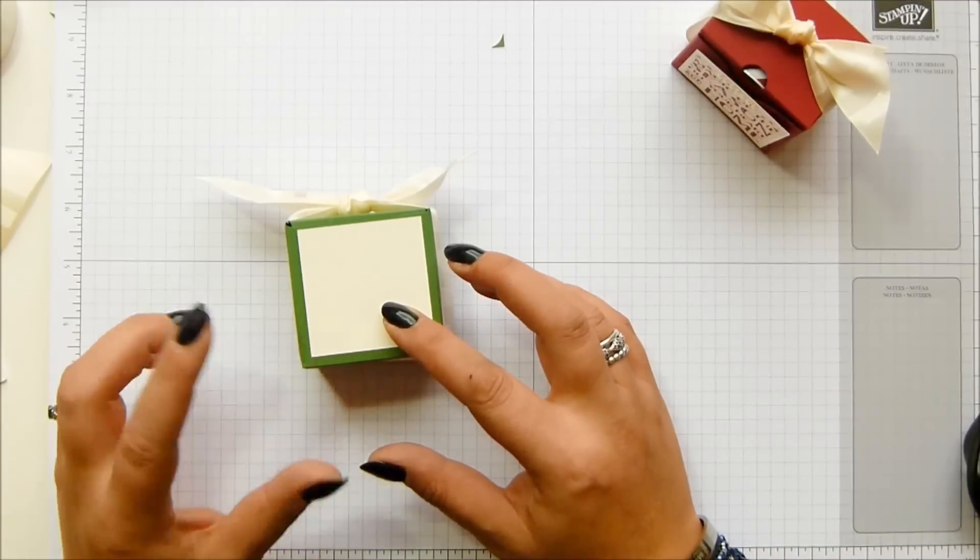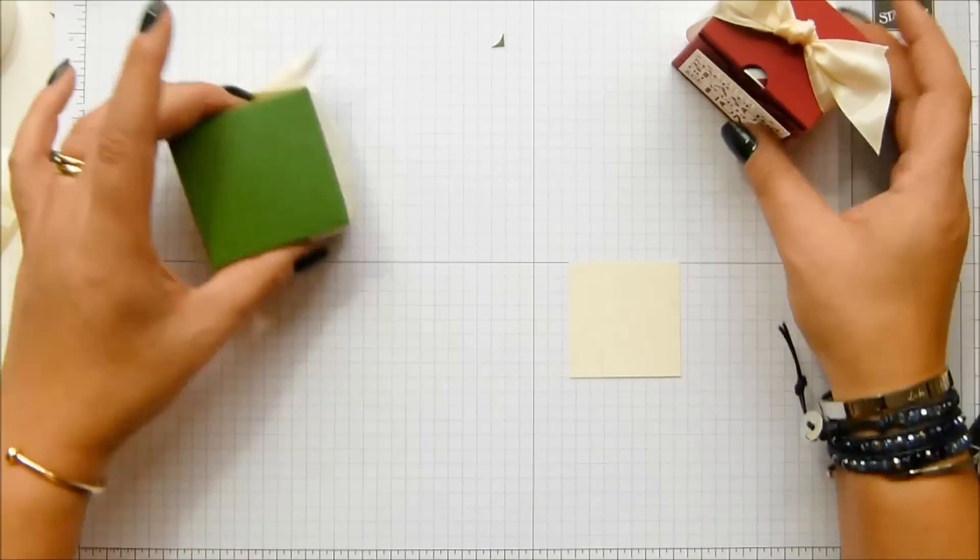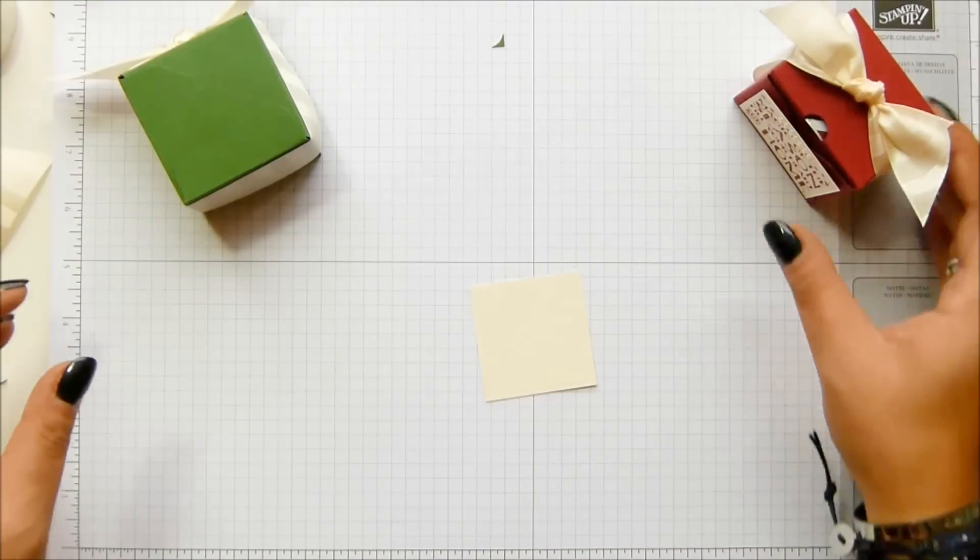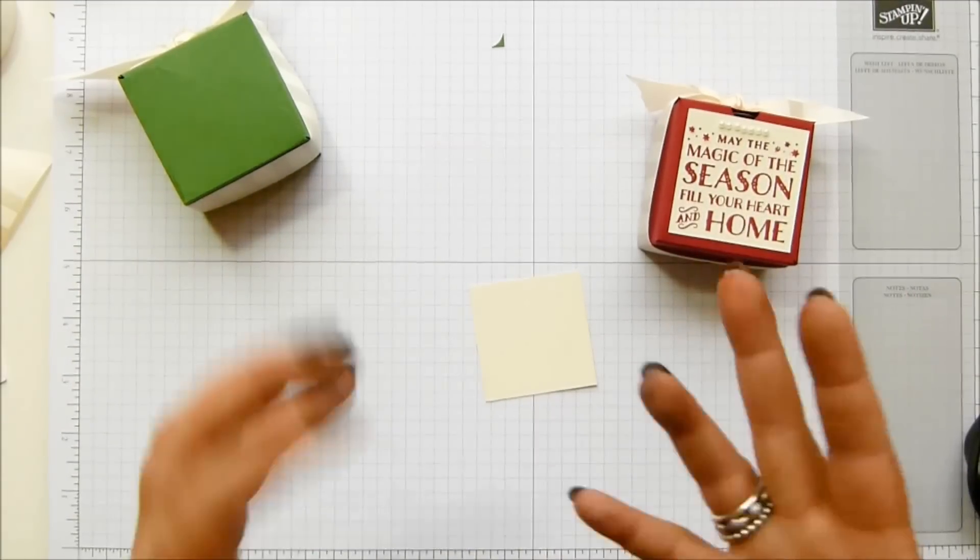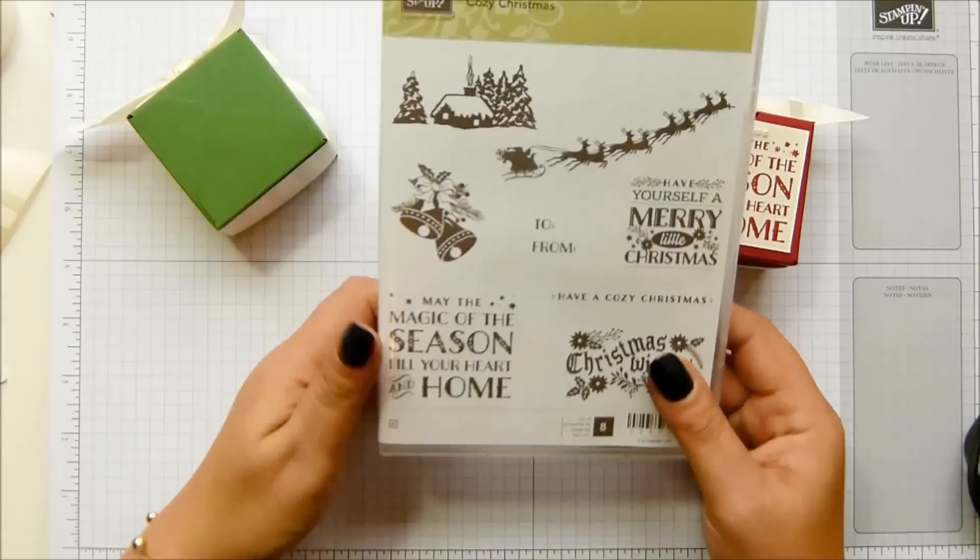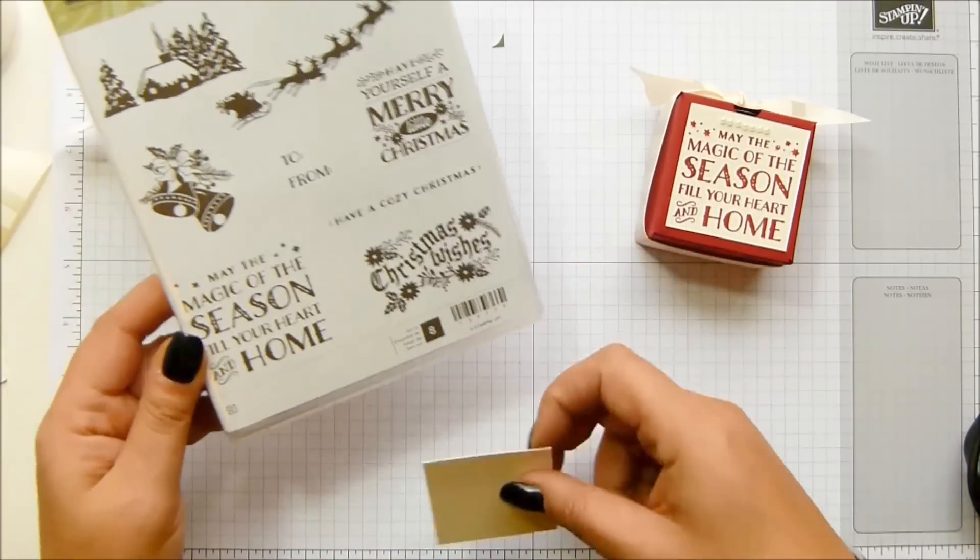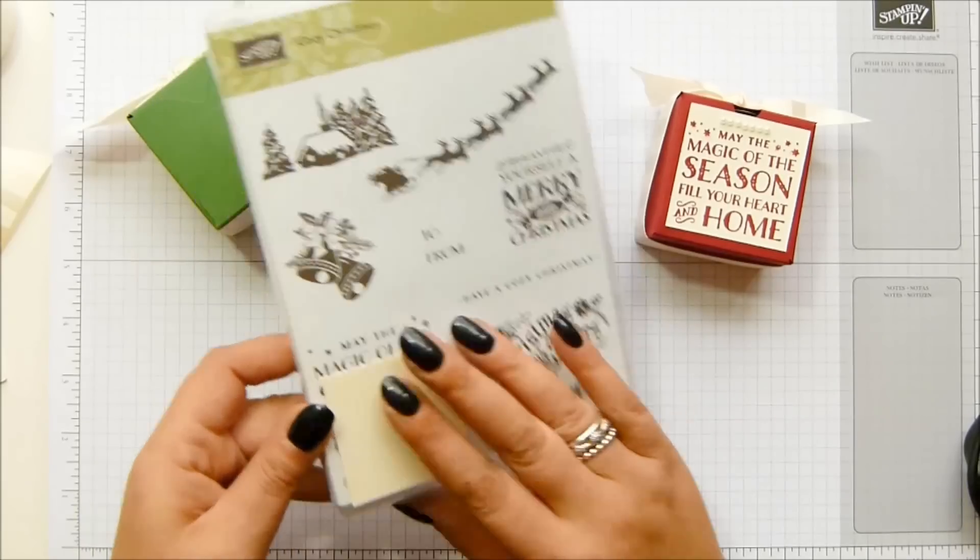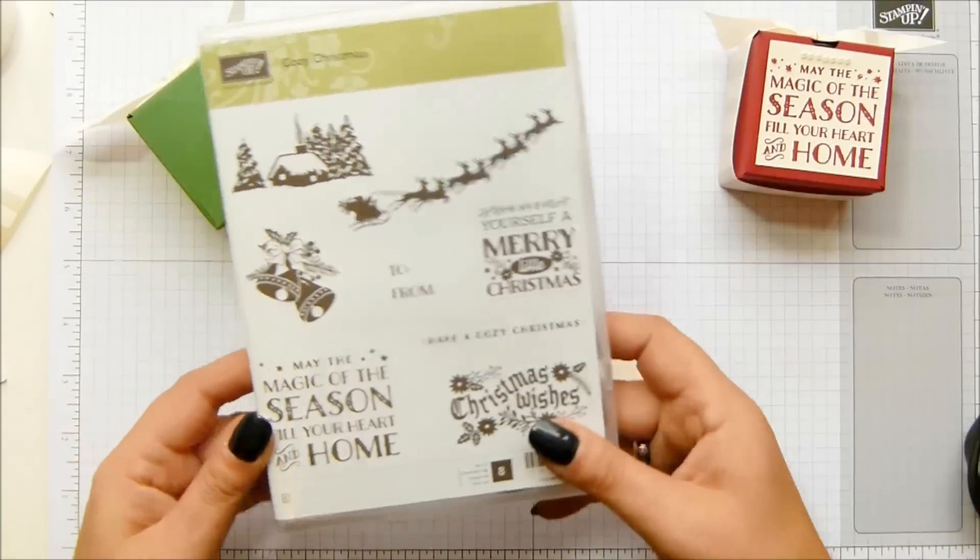So my little panel that's going to hide the majority of that is two by two inches, so five by five centimeters. Very vanilla. And the stamping that I've got, well, you do the stamping afterwards because I just wanted to make sure it fitted. And I've taken the Cozy Christmas stamp set. I used Magic of the Season before and it does fit absolutely perfectly on there, as you can see. This time I'm going to go with this one and I'm going to show you how to work with the Stamp-a-majig.